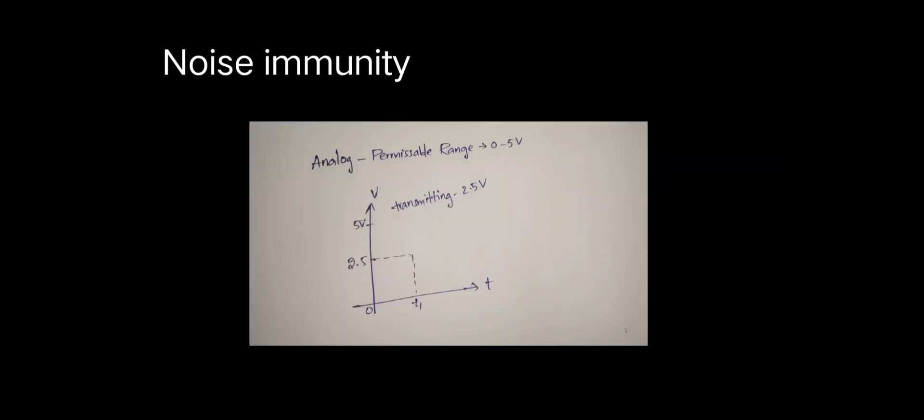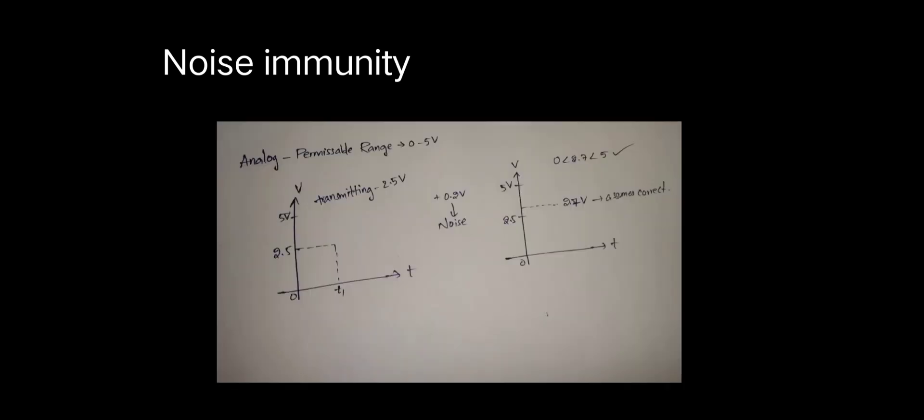For example, consider an analog system and the permissible range is 0 to 5 volts and we want to transmit 2.5 volts. If a noise of 0.2 volts is added from the channel to the signal, then the output that is received will be 2.5 plus 0.2, that is 2.7 volts, and it will be considered correct as 2.7 volts is in the permissible range of 0 to 5 volts.